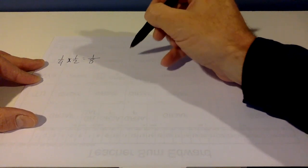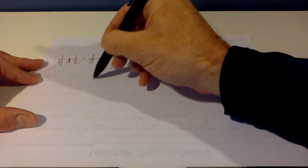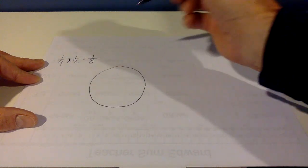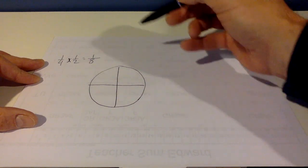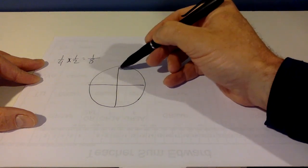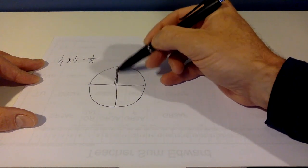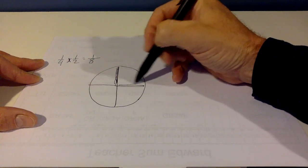And to consider this, think about a circle, a pie, a cake, a pizza, what have you. And you have 1/4, so let's look at this quarter right here.